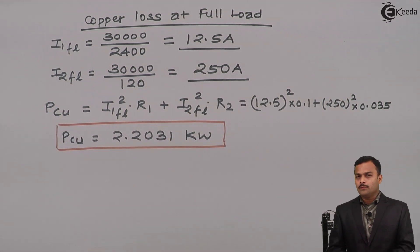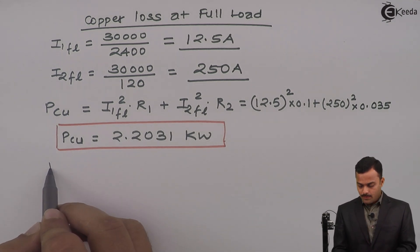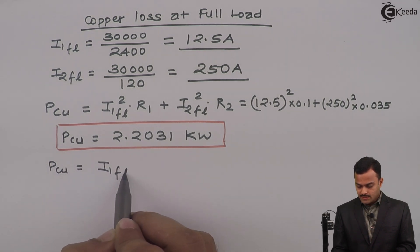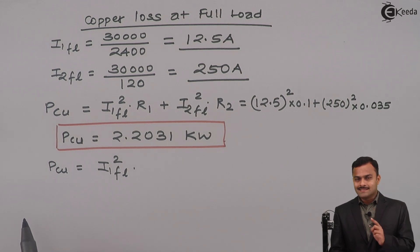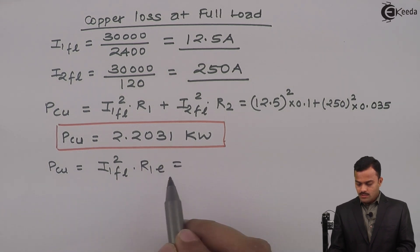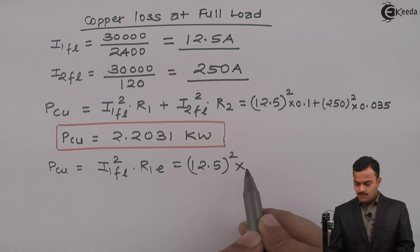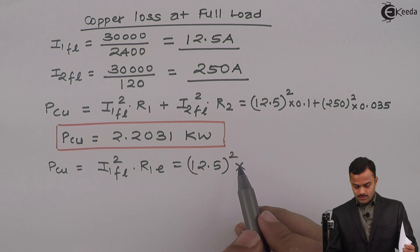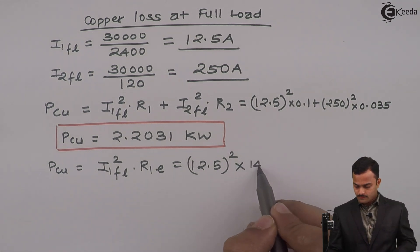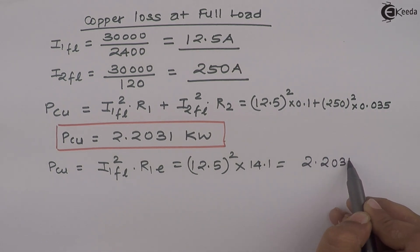Two additional formulas can also be used. If we consider only one circuit with all elements referred to the primary side: copper loss = I1FL² × R1E = 12.5² × 14.1 = 2.2031 kilowatt — the same answer.